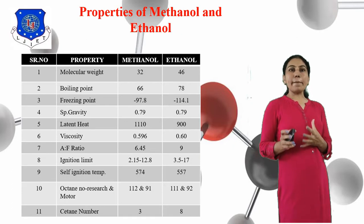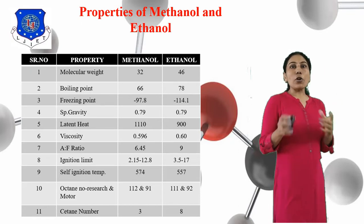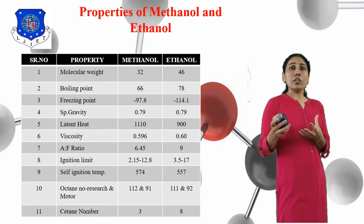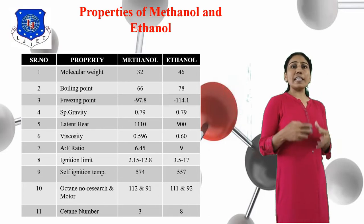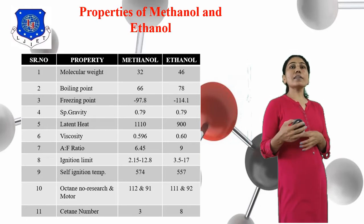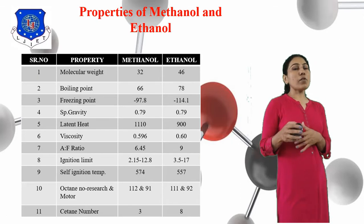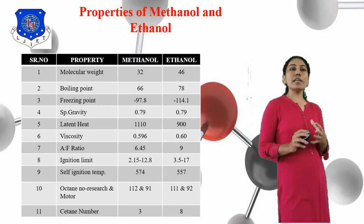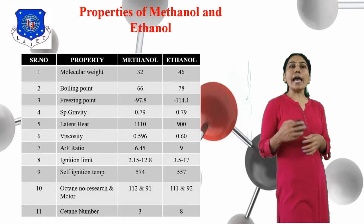Octane number means the anti-knock characteristics of the fuel in a mixture of iso-octane and heptane. Iso-octane has very good anti-knock properties. The octane number of iso-octane is 100 and heptane is 0. Cetane number is the performance rating of fuel as diesel fuel. The cetane number of Methanol is 3 and Ethanol is 8. These are the various properties of Methanol and Ethanol as fuel.